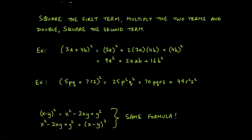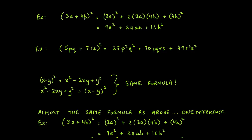Let's run through some examples. For (3a + 4b)², you could foil it out, but the formula is much faster — especially when we get to factoring in chapter six. Following the recipe: square the first term (3a)², plus double the product of the two terms 2 times 3a times 4b, plus square the last term (4b)².